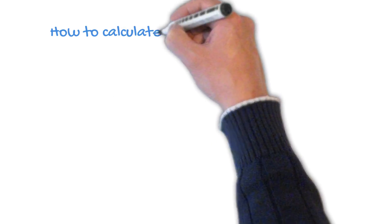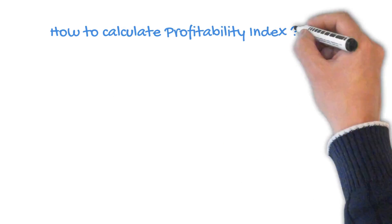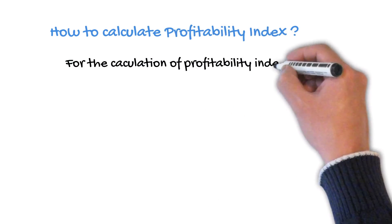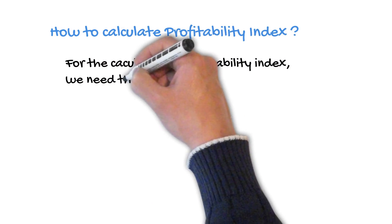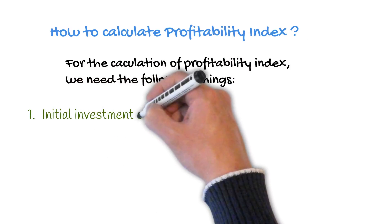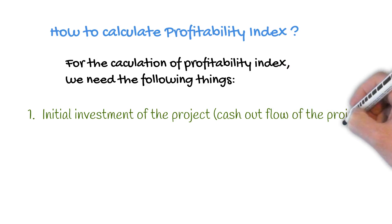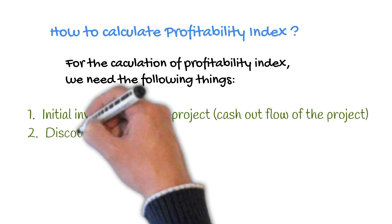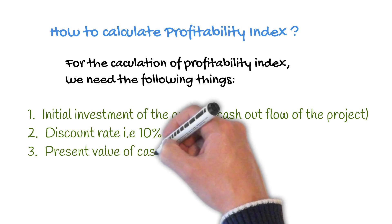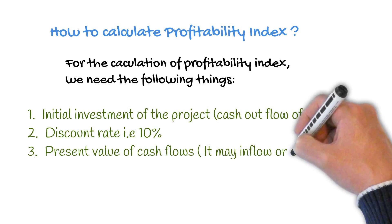For the calculation of Profitability Index, we will need the following things: 1. Initial Investment of the Project, which is the cash outflow of the project. 2. Discount Rate. 3. Present Value of Cash Flows, which may be inflow or outflow of cash.